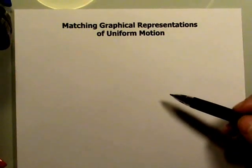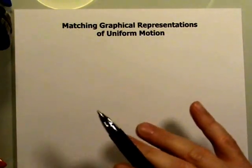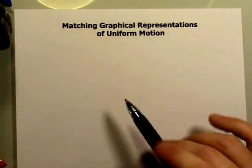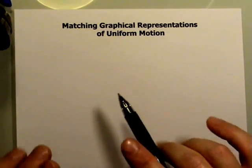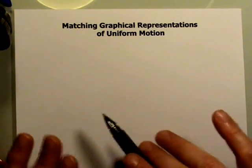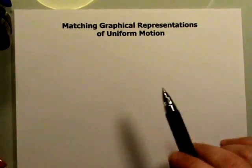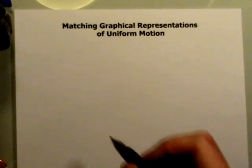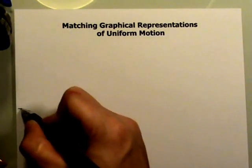We're going to make a number of DT graphs and VT graphs to match up the two graphs and see how one graph looks if we're looking at the other graph and vice versa. In order to do that, we're going to make six examples.